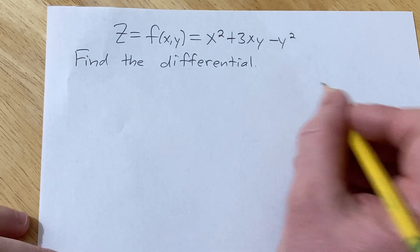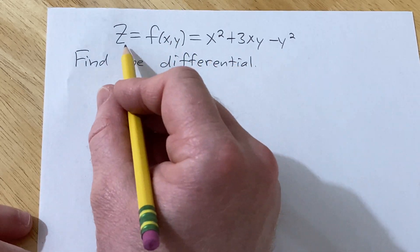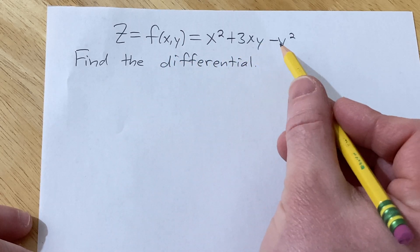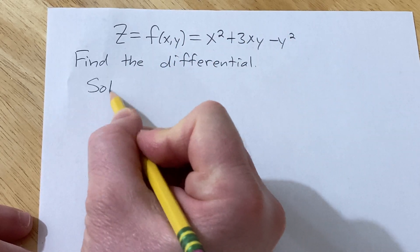All right, so we are going to find the differential. We're given z equals f of x,y equals x squared plus 3xy minus y squared.